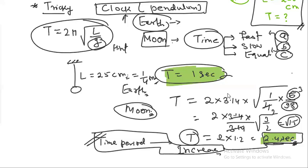If someone is working on a second and another person is working on 2.4 seconds, then it's slow or fast? Slow. Slow. Very good.